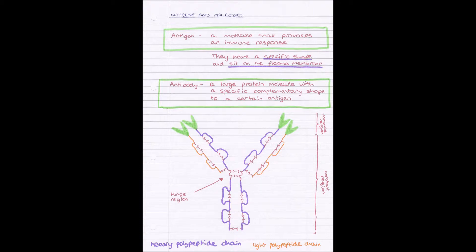We have a constant region and a variable region. Now the constant region is a part which never changes, no matter what antibody we're looking at. We get different types of antibody, but no matter what antibody we're looking at, this region will always be the same: those four heavy polypeptide chains and the two light polypeptide chains.